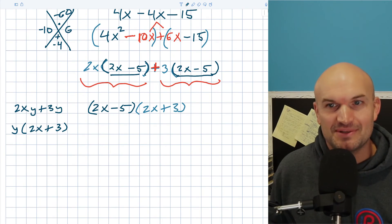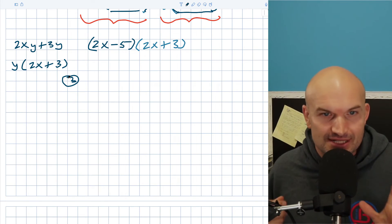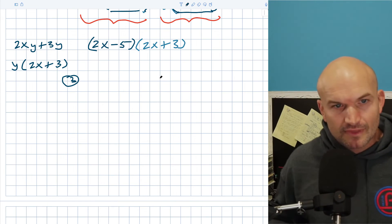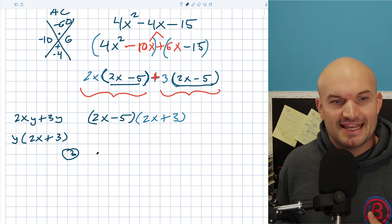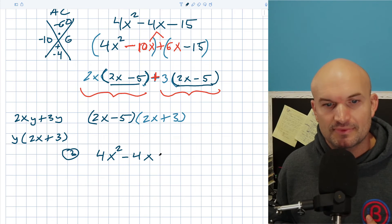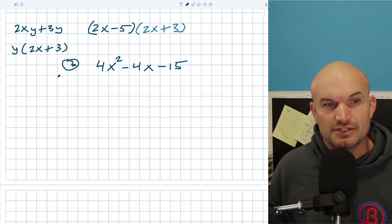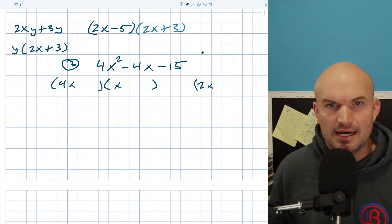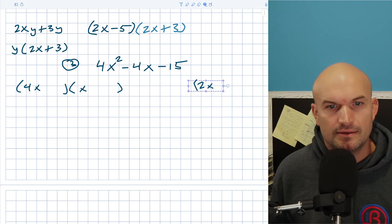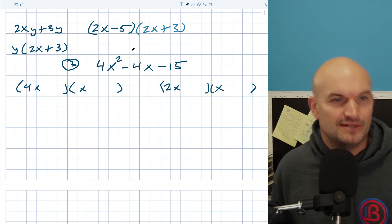Now let's go into the last method, which is my favorite and what I think all students should aspire to. If you get stuck, you can always refer back to the other methods. But I want to go through my thought process when looking at a problem like this — can I factor this across integers? So what I like to do is say, all right, this can be broken down into a product of two factors: four x times x, or we could do two x times two x.